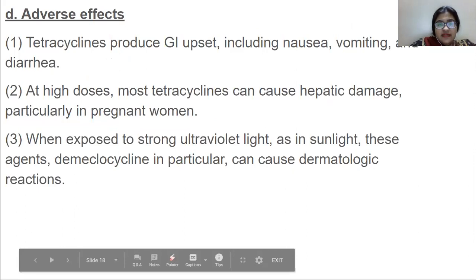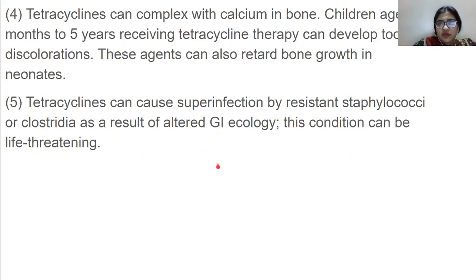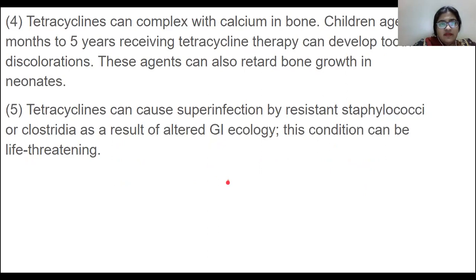Regarding adverse effects, tetracyclines produce GI upset including nausea, vomiting, and diarrhea. At higher doses, most tetracyclines can cause hepatic damage, particularly in pregnant women. When exposed to strong UV light or sunlight, these agents — demeclocycline in particular — can cause dermatological reactions. Tetracyclines can complex with calcium in bone, and children aged 6 months to 5 years receiving tetracycline therapy can develop tooth discoloration. These agents can also retard bone growth in neonates. Tetracyclines can cause superinfection by resistant staphylococci or clostridia due to altered GI ecology, which can be life-threatening.